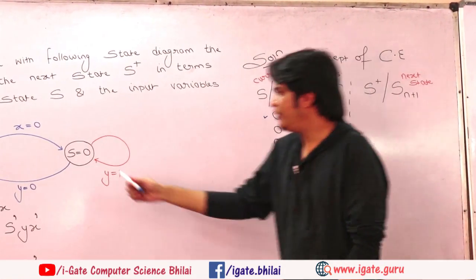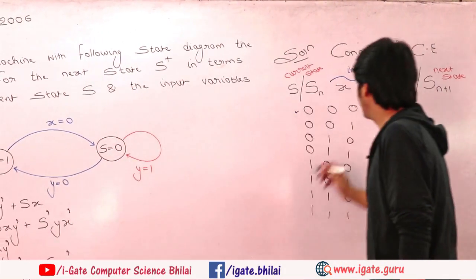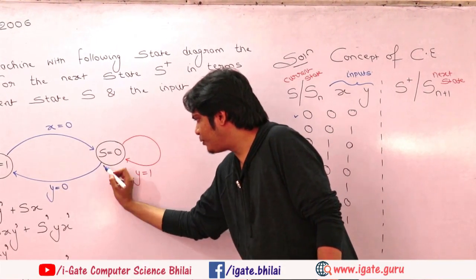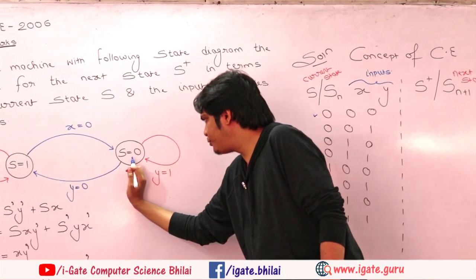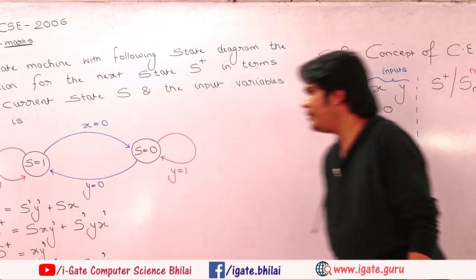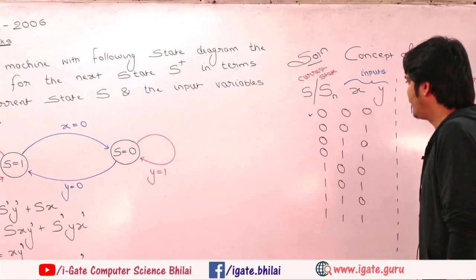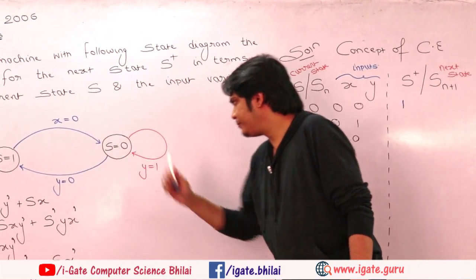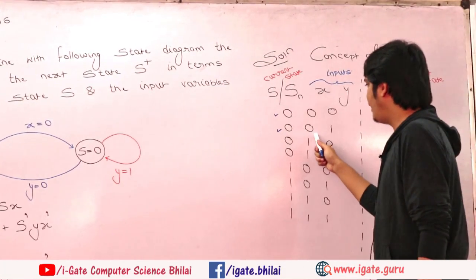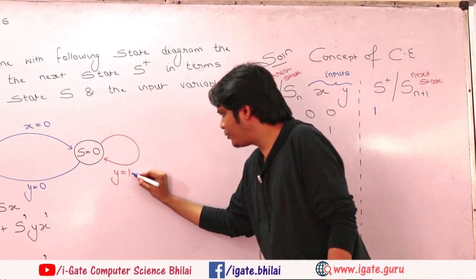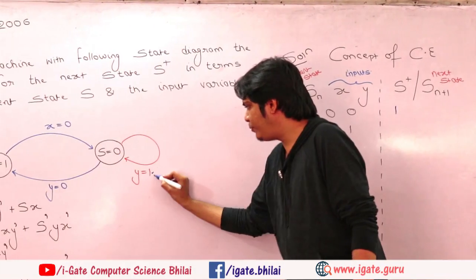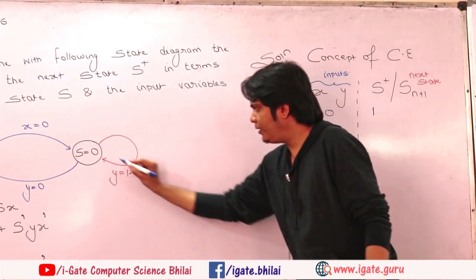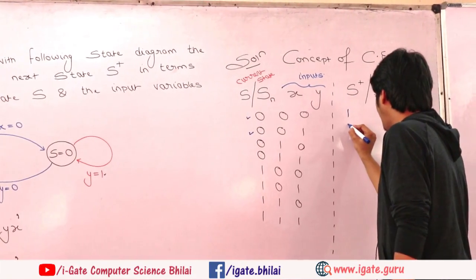For S=0, X=0, Y=0: when S=0 and Y=0, the output becomes 1 — we fill in 1. For S=0, X=0, Y=1: when Y=1, the output is independent of X. Since S=0 and Y=1, the output remains 0 — fill in 0.